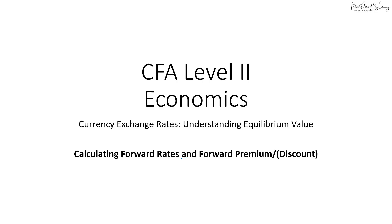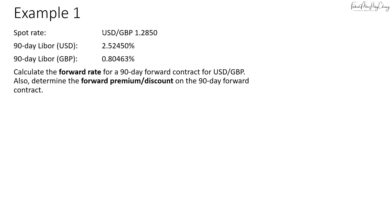You can be asked to calculate the forward rates or the forward premium or discount of a forward contract. A forward contract is a contract that you enter into today for settlement in the future. Let's say we have the spot rate for dollar to pound of 1.2850 and we have the 90-day LIBOR for dollar and pound. We'll calculate the forward rate for a 90-day forward contract for dollar to pound and determine the forward premium or discount on this contract.